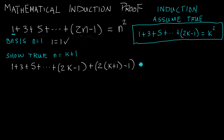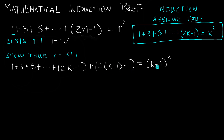And then we're saying that equals the right hand side, which is n squared — but in our case we're doing k plus 1 squared. So if we can show the left hand side equals the right hand side, then we have completed the mathematical induction proof.